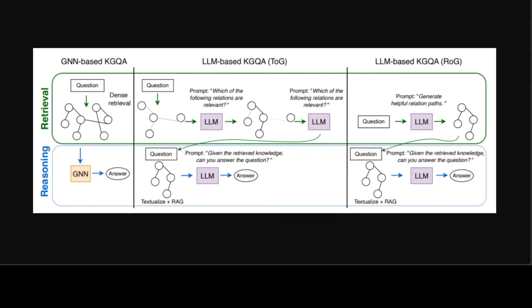The way it works is quite interesting. Firstly, a GNN reasons over a dense knowledge graph subgraph to retrieve answer candidates for a given question.